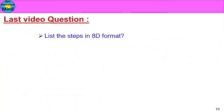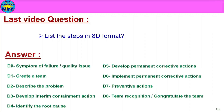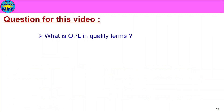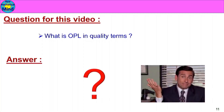Question from previous video: List the steps in the 8D format. D0 – symptom of failure or quality issue; D1 – create a team; D2 – describe the problem; D3 – develop interim containment action; D4 – identify the root cause; D6 – implement permanent corrective actions; D7 – preventive actions; D8 – team recognition and congratulate the team. Next question: What is OPL in quality terms? Comment your answer in the comment box.